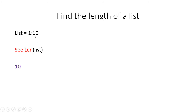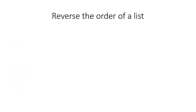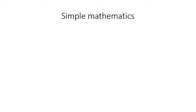For a list of 10 values (1 to 10), 'len' returns 10. To sort a list in ascending order, type 'sort(a)' and print with 'c a'. To reverse the order, type 'reverse(a)' — after that, 'c a' prints the list in descending order.